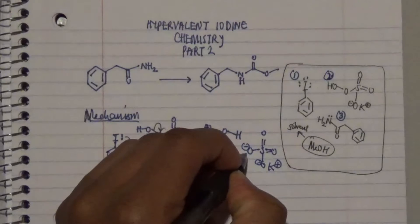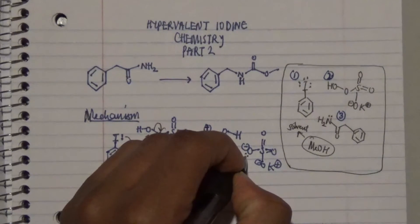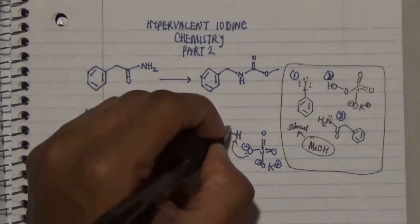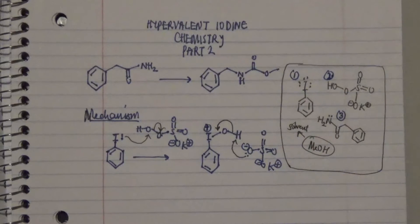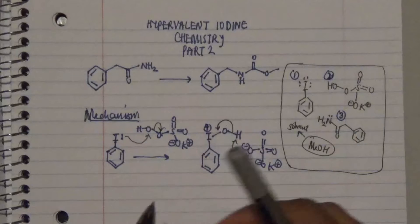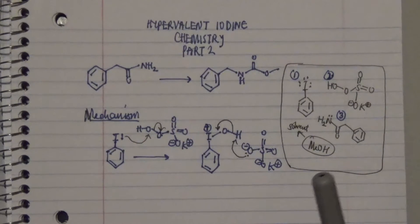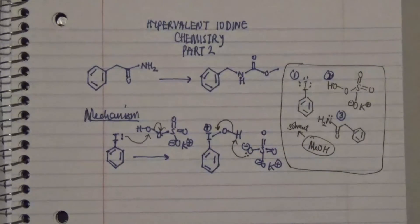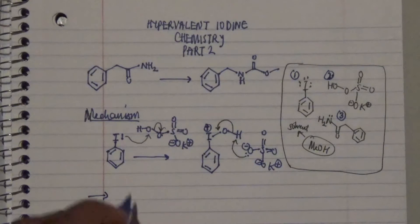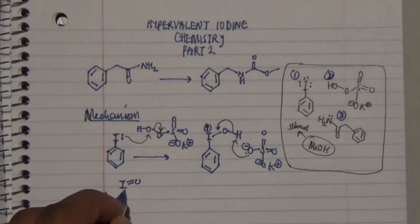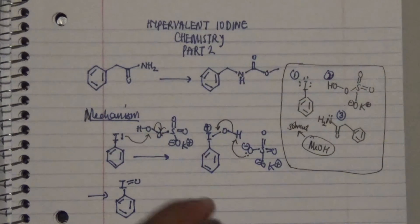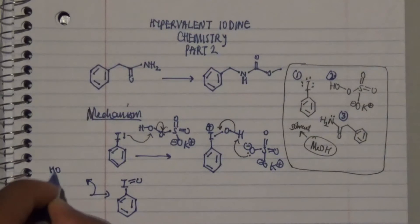Focus on the lone pairs on this particular oxygen, because it needs to extract a particular hydrogen, and what happens then is that you form a double bond between the iodide and oxygen. This process gives the iodide its hypervalent nature and enables this factor reaction to be effective overall. What you get is a double bond on the oxygen, and then this group comes off.